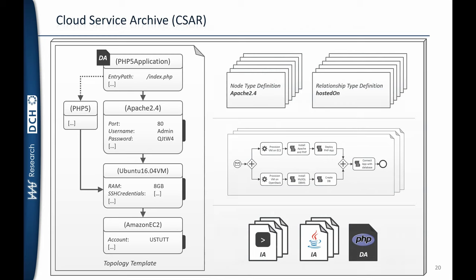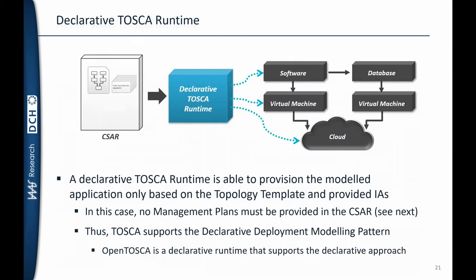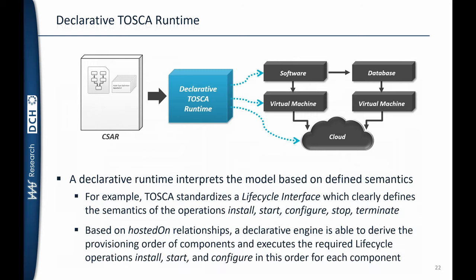To deploy an application packaged in a CSAR, a declarative TOSCA runtime can consume the CSAR, interpret the topology template, and derive the necessary steps to deploy the application. In this case, no management plans are required — the TOSCA runtime derives the steps based on the topology template and the lifecycle interfaces.